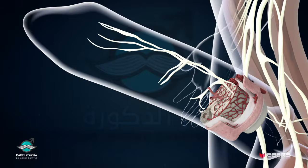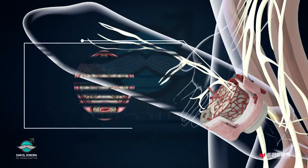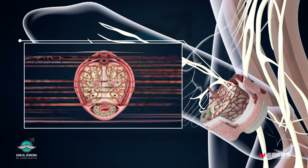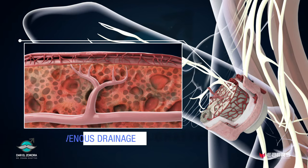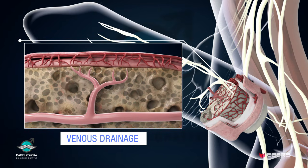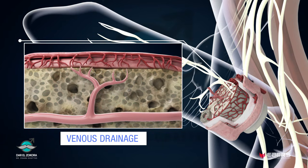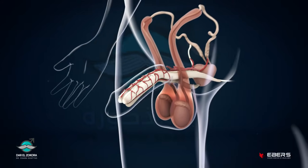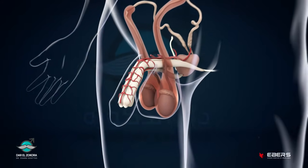Finally, after ejaculation, the sympathetic innervation is responsible for contracting the trabecular smooth muscles again. Consequently, the penile arterial blood flow diminishes and venous drainage occurs, leading to progressive evacuation of blood from the trabeculae. The penis then reverts to its flaccid state.